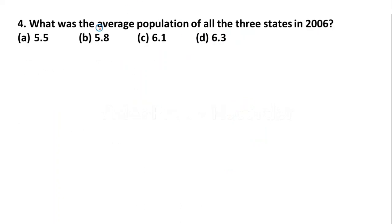Question 4: What was the average population of all 3 states in 2006? Options: A: 5.5, B: 5.8, C: 6.1, D: 6.3. We have to take the population values from States A, B, and C in 2006 and divide by 3 to get the average.